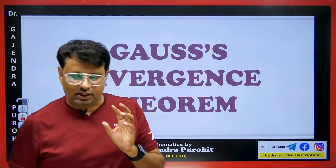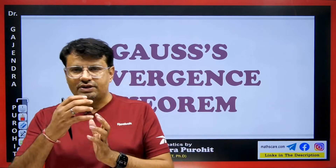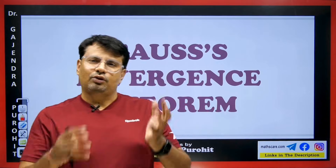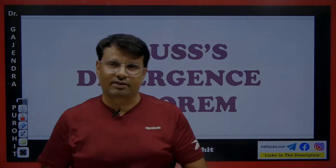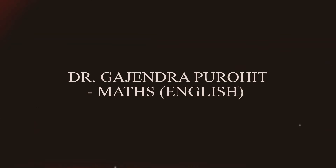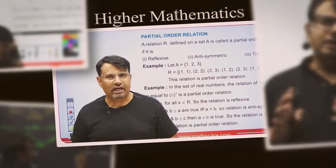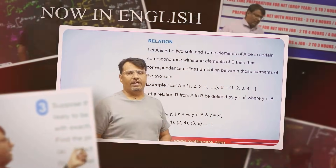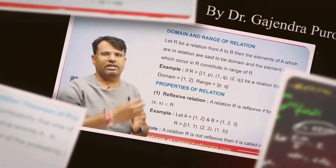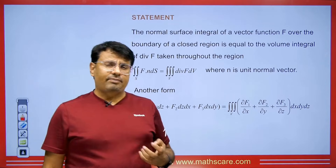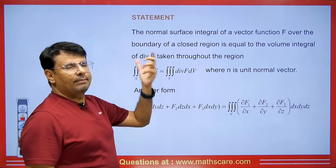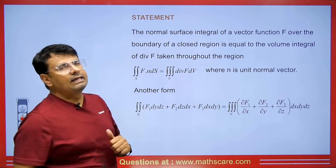The Gauss Divergence Theorem is often asked in exams — they ask how we can solve questions using it. Sometimes there are questions that ask for verification, so you have to do the question in two ways. If we are given any surface integral, we can easily convert it into triple integration and find its value without any problem.